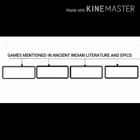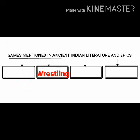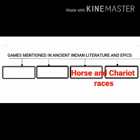Now let's solve the second web: games mentioned in ancient Indian literature and epics. We have to write the names of those games which are mentioned in our ancient Indian literature and epics. In the first box write down dice — in bracket write Dute, which is a Sanskrit word. In the second box write down wrestling. In the third box write down horse and chariot races. In the last box write down chess.